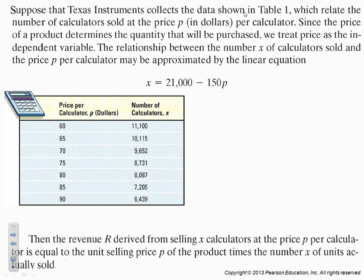Suppose that TI collects the data shown in Table 1, which relates the number of calculators sold at the price p in dollars per calculator. Since the price of a product determines the quantity that will be purchased, we treat price as the independent variable, so price is independent, and the number of calculators sold is a dependent variable. The relationship between the number x of calculators sold and the price p per calculator may be approximated by the linear equation.